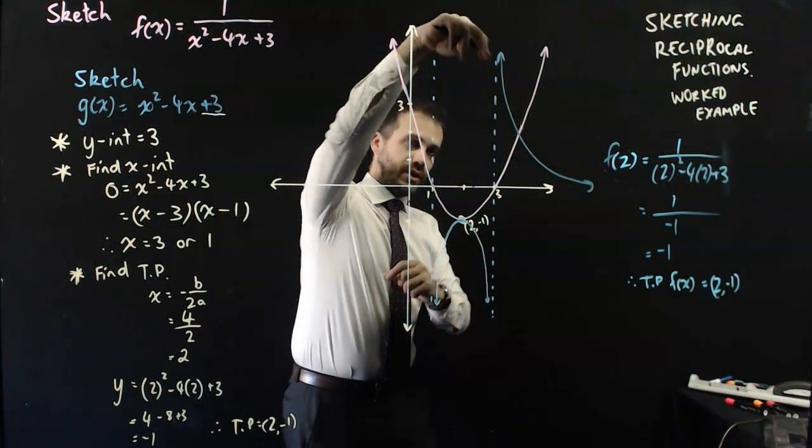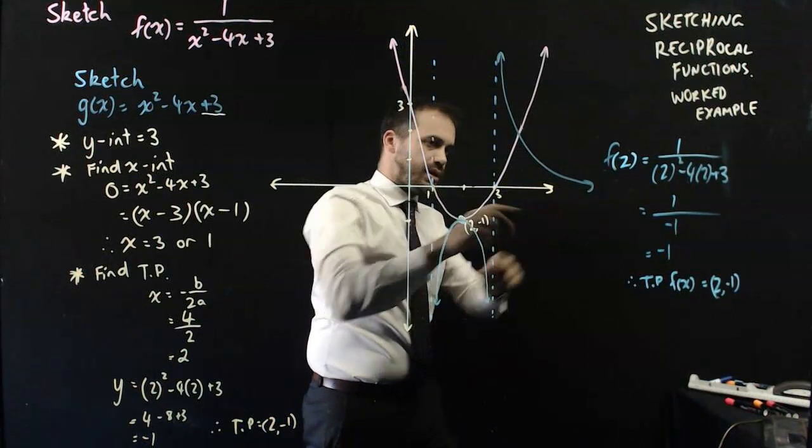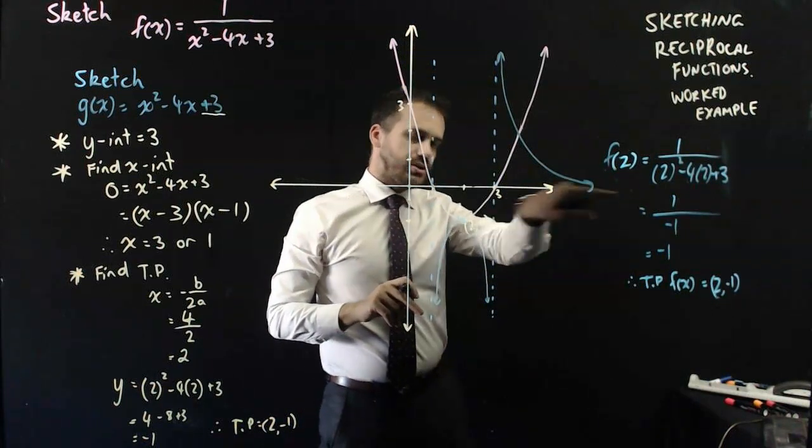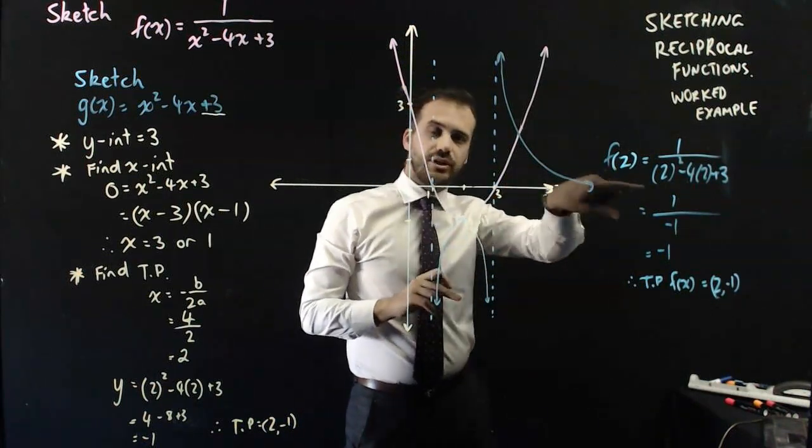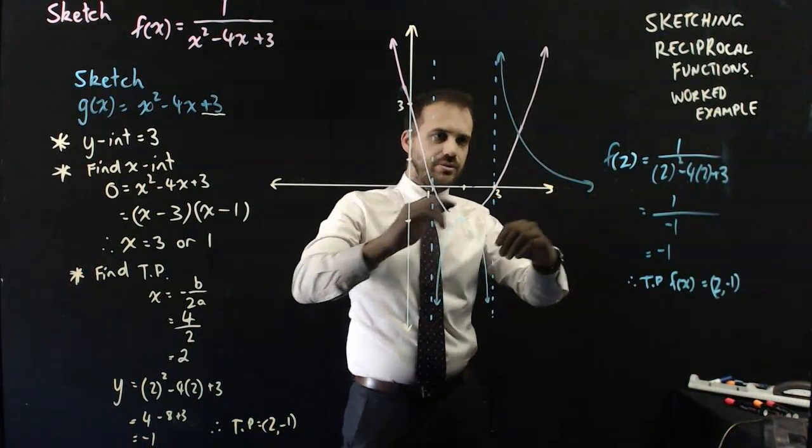Okay. And you can see that it's strictly decreasing from there to there, heading off to zero, getting closer and closer to y equals zero, but never ever touching.